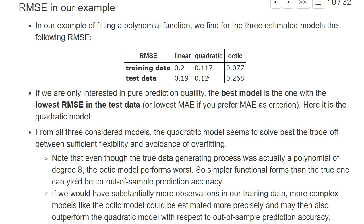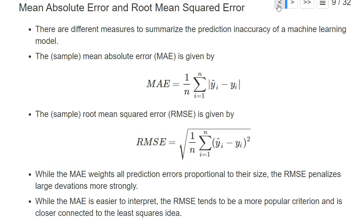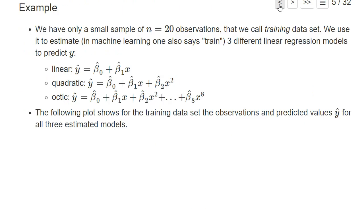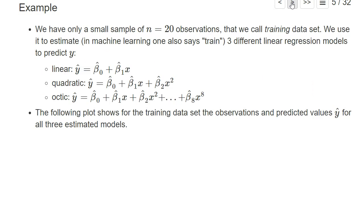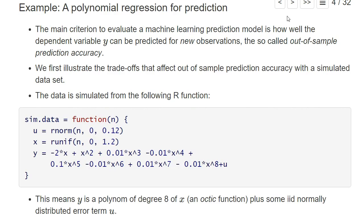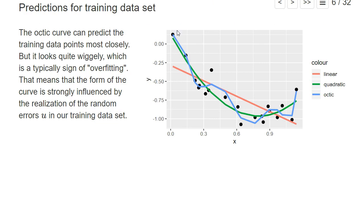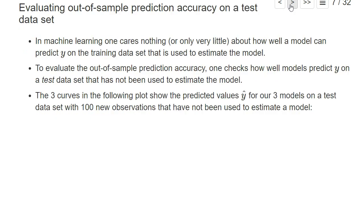Note that this is the case even though we know that the true data generating process was actually the octic model. But because we only had 20 observations in our training data set, we could not really well fit the true parameters of the model. Our octic model was influenced too much by noise, so that it has substantial overfitting.